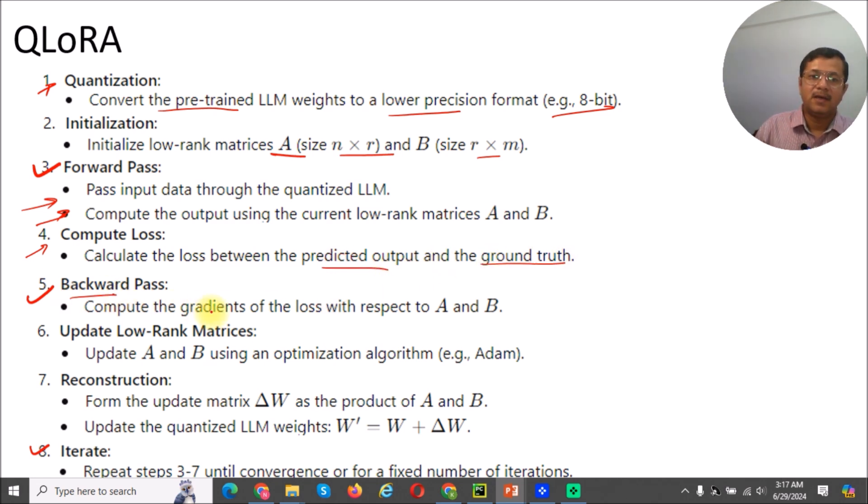And then backward pass. Here we compute the gradient by taking both of those matrices, not just a single matrix, by using both matrices. And then we will update the low-rank matrices.